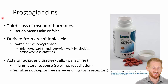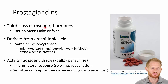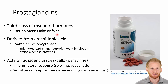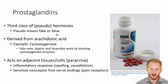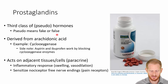Sometimes you'll hear about a third class of hormones called prostaglandins. They are not real hormones — they are pseudo-hormones, meaning fake hormones, because they don't act the way other hormones do. Instead of being released into the bloodstream to affect cells in distant locations, they are typically paracrine in action.